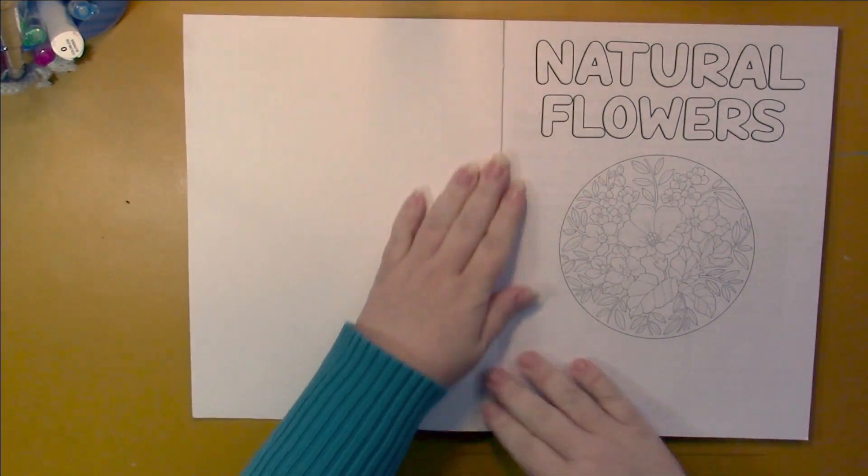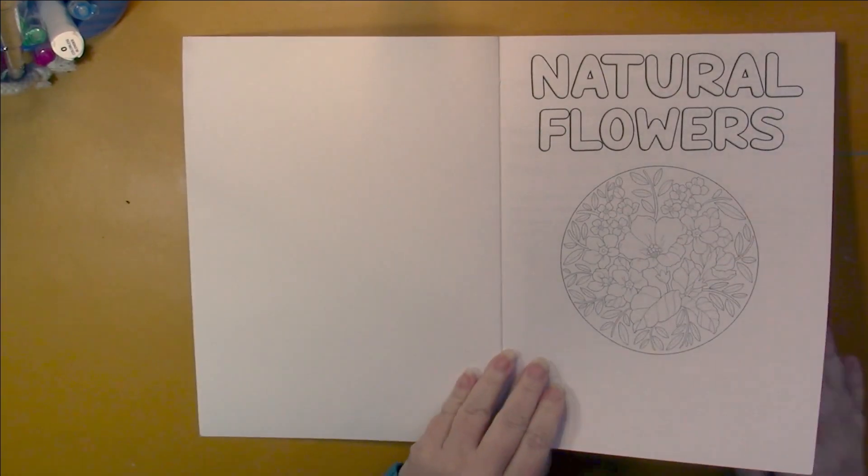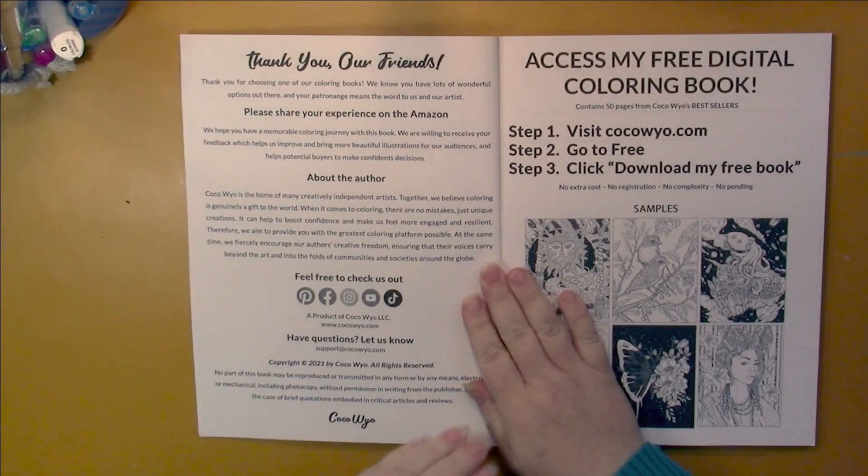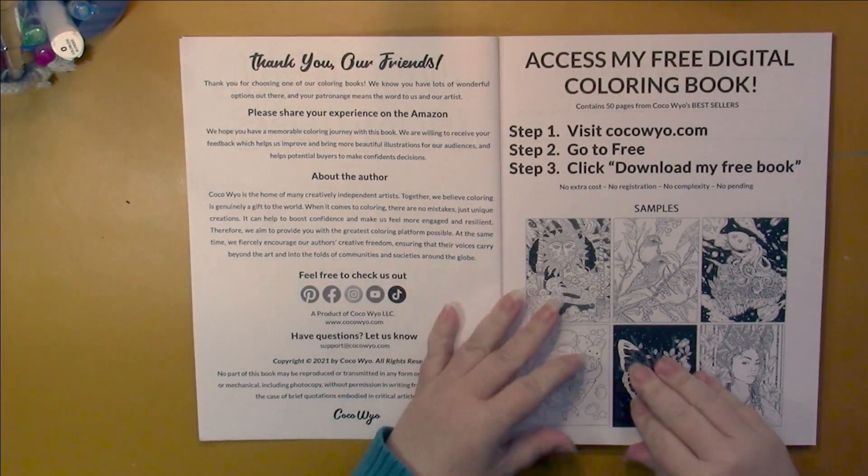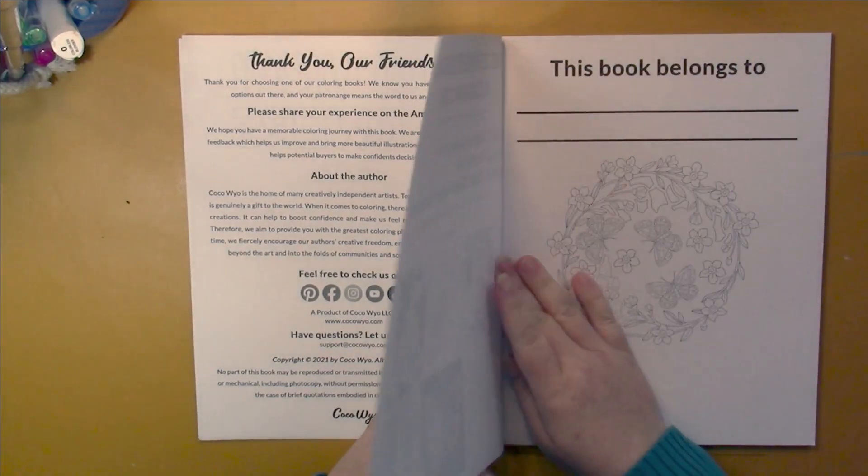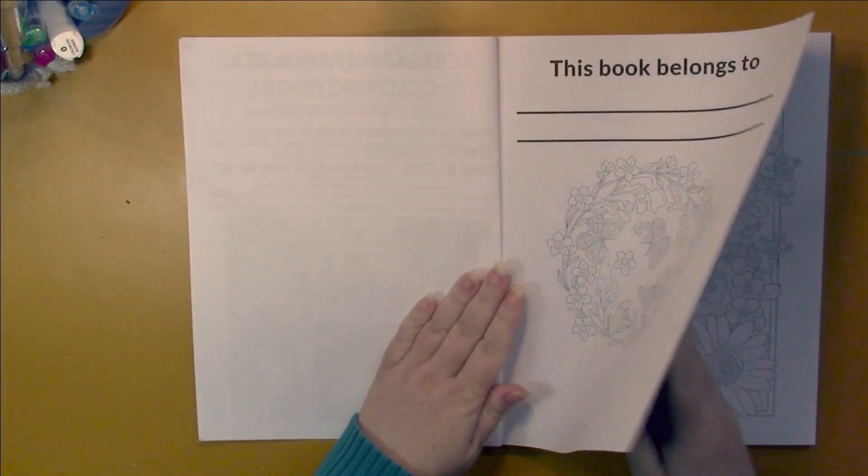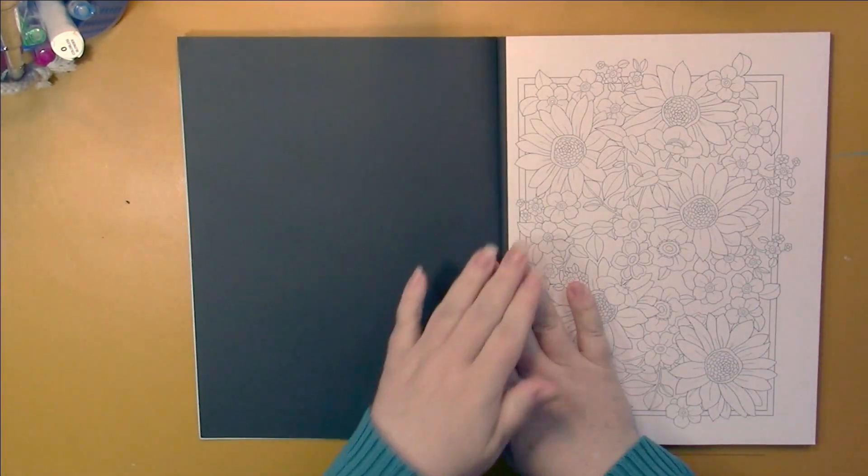We start with the title page, social media and how to get a free book. This book belongs to, and we go into the illustrations.